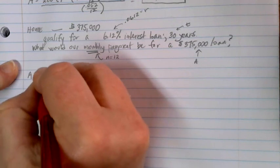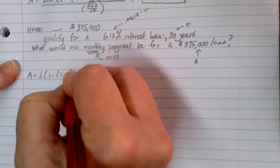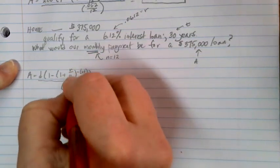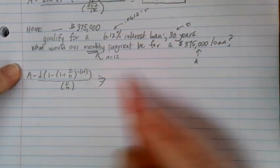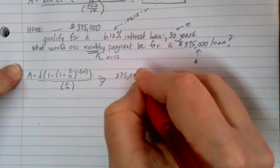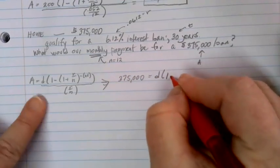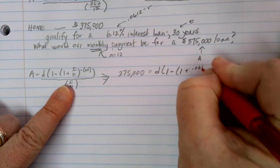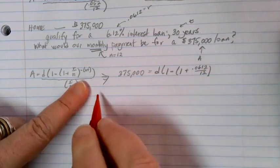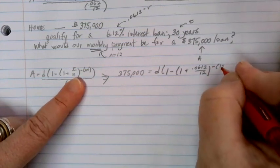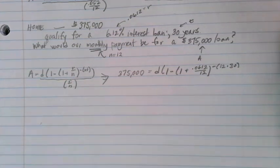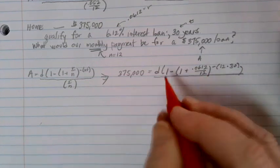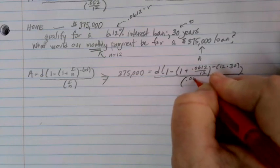Here's our formula again: A equals D times 1 minus 1 plus R over N to the negative NT, close off the parentheses, divided by R over N. So if we set this up, A is my $375,000, D is what I'm looking for. 1 minus 1 plus, my rate was 0.0612, I'm doing a monthly payment so I'm going to divide by 12. Because I'm doing a loan my exponent is negative, and that's 12 times 30 because our house loan is for 30 years. We're going to close off that top set of parentheses and divide the whole thing by R over N, which is this 0.0612 over 12 again.